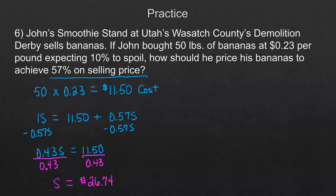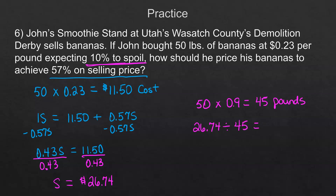Now, he's not going to sell all 50 pounds at once, so we have to account for the spoilage. If 10% will spoil, he's only selling 90% of what he purchased. 50 pounds times 90% gives us 45 pounds that he can actually sell. The price per pound would be the total cost of $26.74 divided by 45 pounds, so he would sell them for 59 cents per pound.